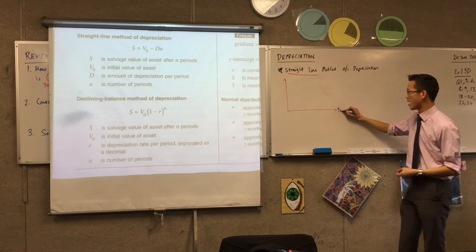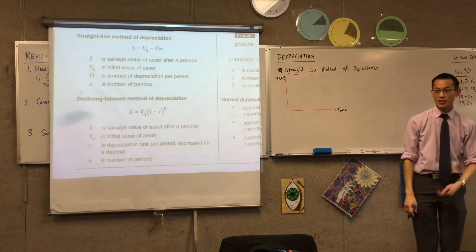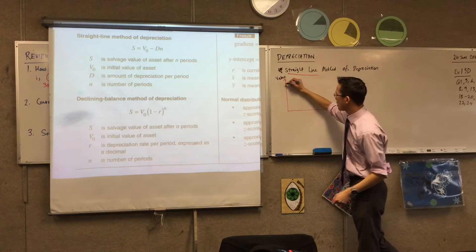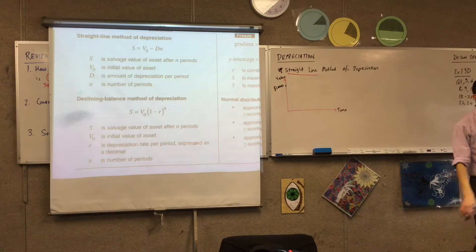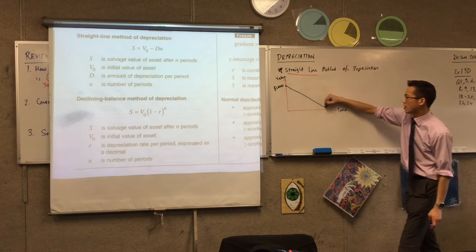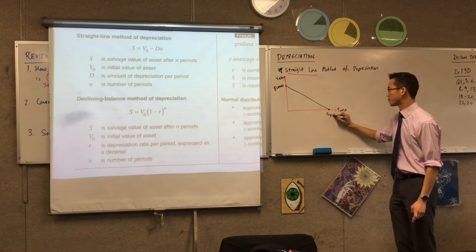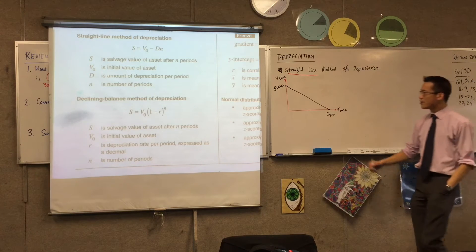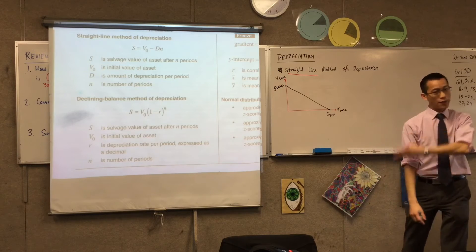I'm going to label this axis as time, and this one as value. Now, as the name suggests — straight line method of depreciation — you're going to start up here at $50,000; that's the value of the car. And after some number of years, you want it to go in a straight line down to zero. So for instance, you might say after five years. You can see if I put in a few extra little markings on my axis here — I've said five years.